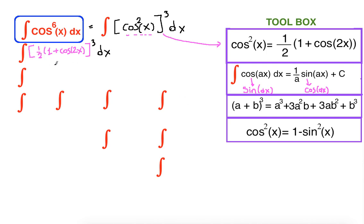Now we are going to take the third power of the terms. What is one half raised to the third power? It's going to be one eighth, and we can pull it in front of the integral sign because it's in multiplication form. What is left inside is one plus cosine of 2x. You can consider it like an a plus b kind of term raised to the third power, so we are going to apply the binomial cube.